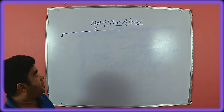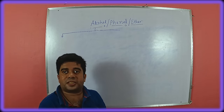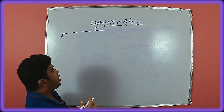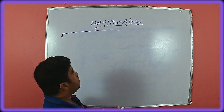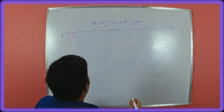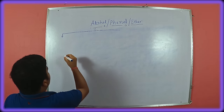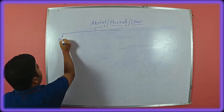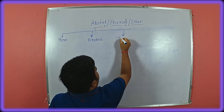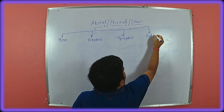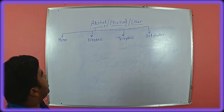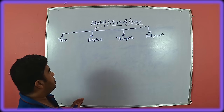Next is classification. Alcohols are classified by the number of hydroxy groups. First classification by hydroxy group: monohydric, then dihydric, then trihydric alcohol, then polyhydric alcohol. For monohydric alcohol, we know that methanol and ethanol are examples.